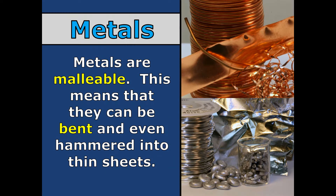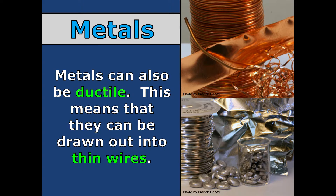We also have another term called malleable. Malleable means it can be bent, hammered into thin sheets — copper, those types of things. Metals are malleable. And ductile — stretched into wires. So your headphones with the long wire, that means ductile. That is another trait of metals.